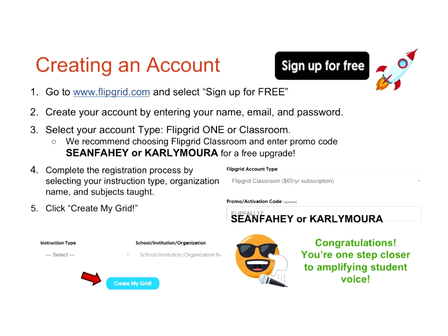Creating an account is super easy. Just go to Flipgrid, sign up for free, create an account with your name, email, and password. If you're signing up for the very first time, select Classroom Account and put our name in for the promo code. You do not have to submit any payment — it won't automatically charge you. It will automatically walk you into creating your first grid and getting started. It's so super simple and easy to use. Whether or not you're a tech person, it's really easy to catch on — the kids figure it out so quickly and then teach everybody else.